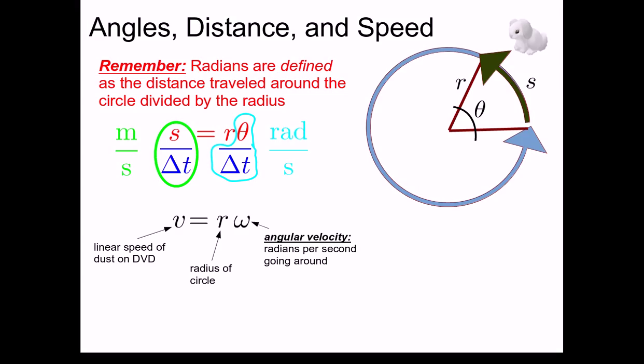Now we've been kind of cavalier with our averages and our limits, but it turns out that this logic holds all the way through. And that the average angular velocity, omega bar, is equal to delta theta over delta t. And the instantaneous omega is equal to the limit as delta t goes to zero of delta theta over delta t.